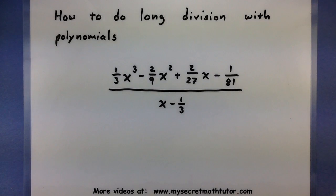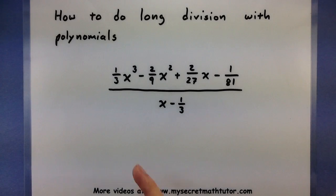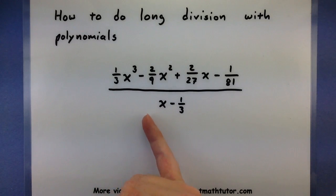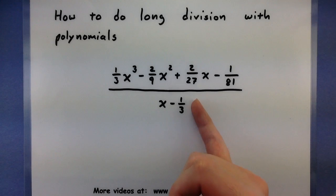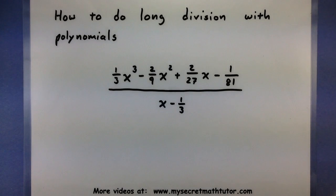Now, this may look complicated, but if you just follow the process to the letter, it works out just fine. Let's go ahead and jump into the problem. What I want to do is take 1/3 x³ minus 2/9 x² plus 2/27 x minus 1/81 and divide that all by x minus 1/3.